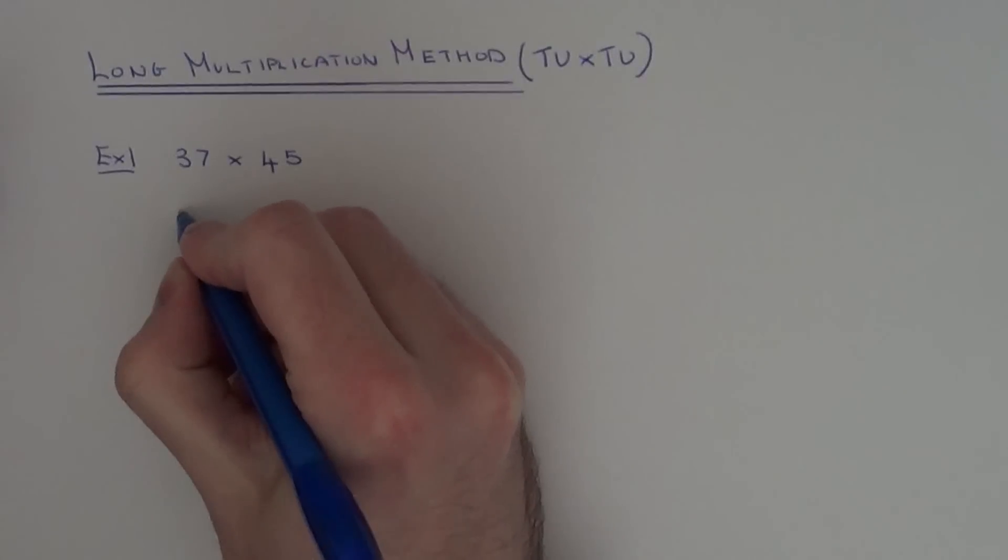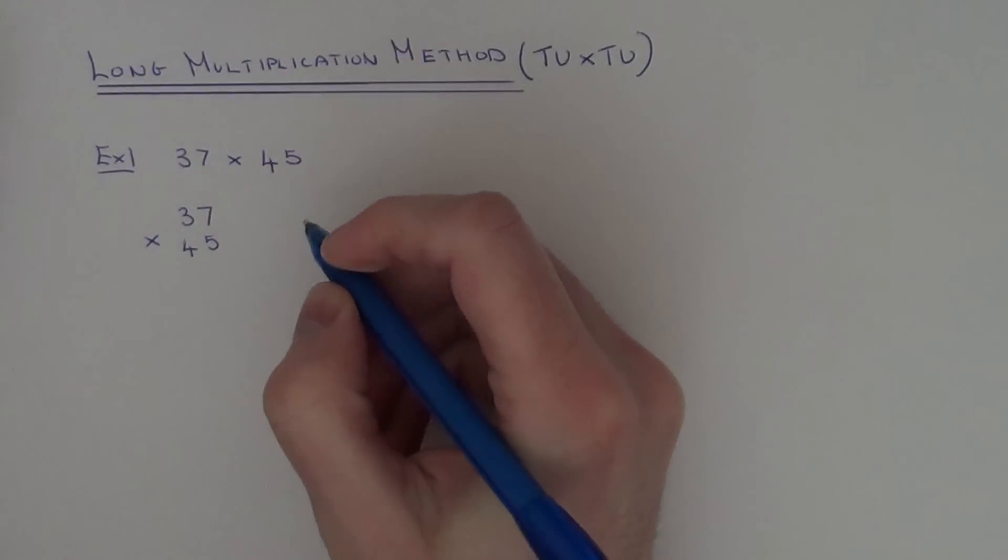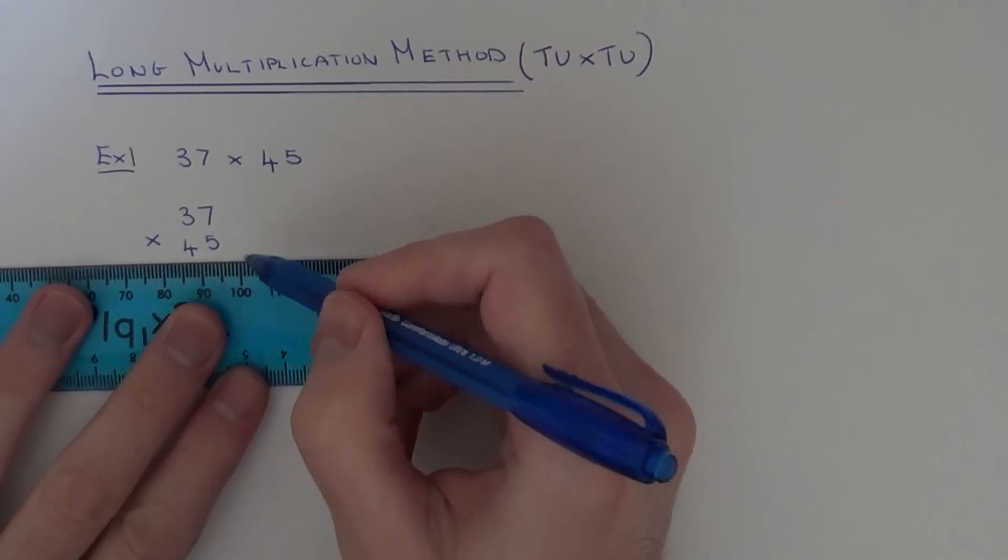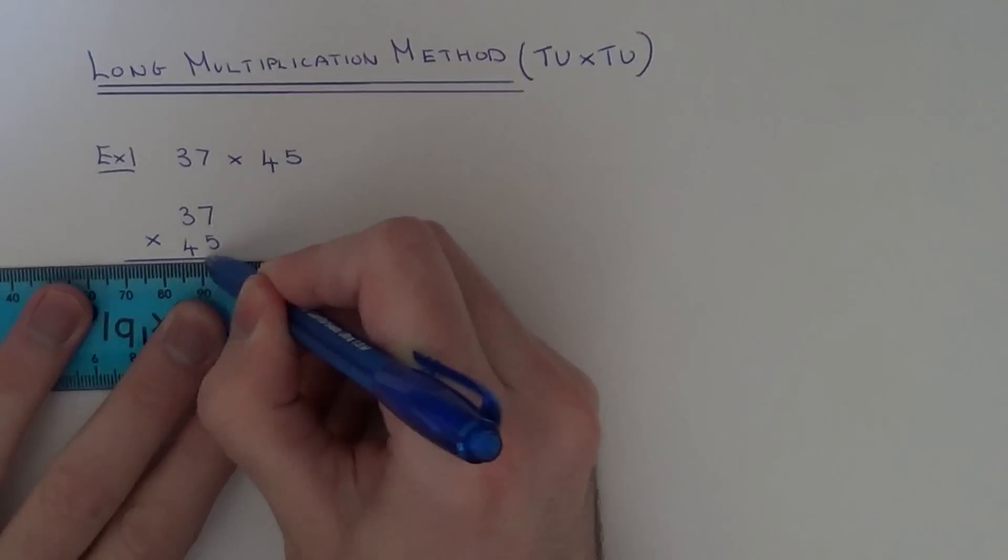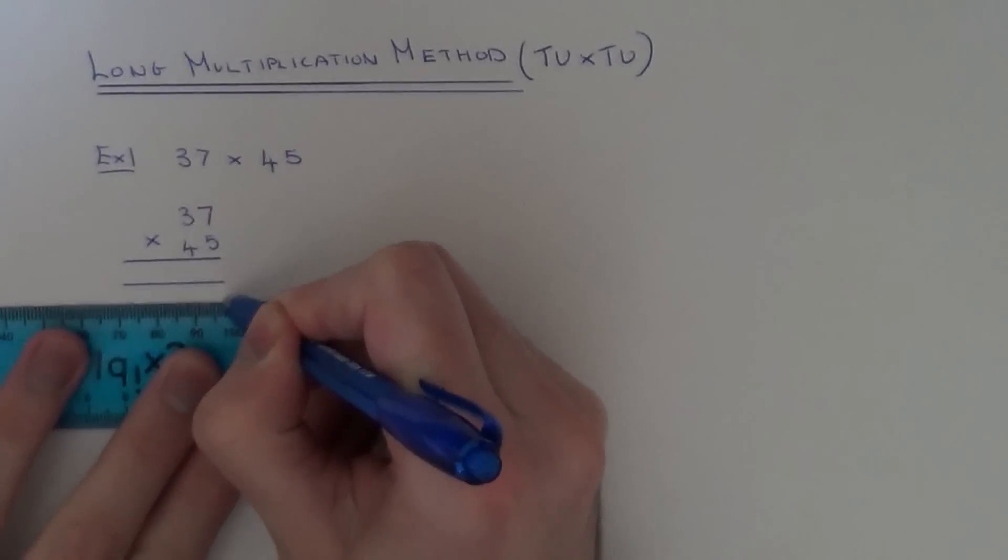So the first thing you need to do is write the two numbers underneath each other and put a multiplication sign in the corner. What you need is three answer lines, so if we just draw those ready underneath.